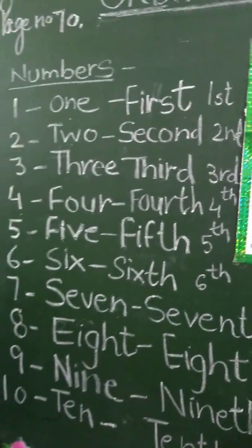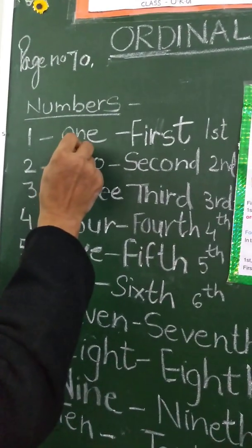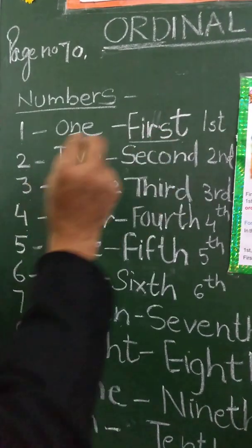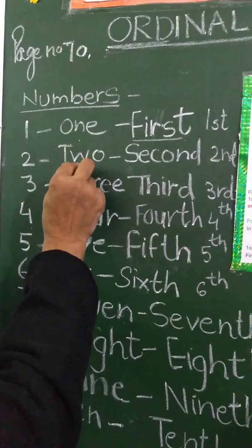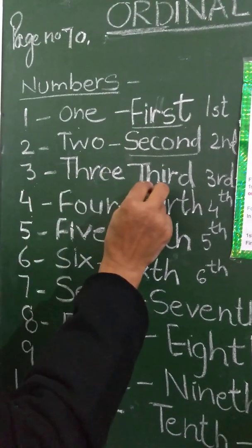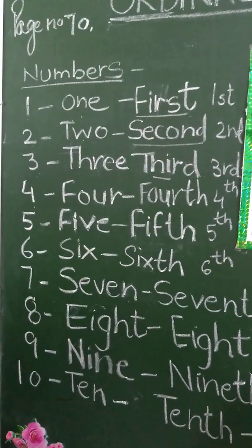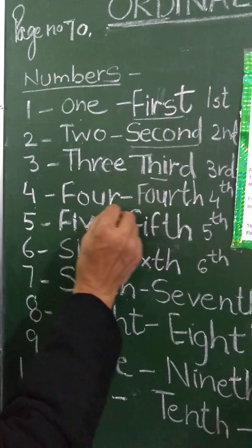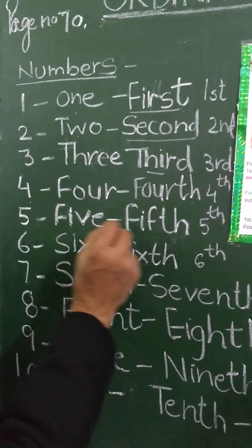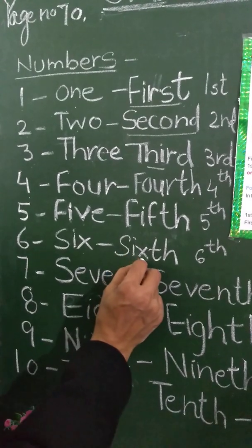Here I will tell you what an ordinal number is. When we say one, in ordinal number we will say first. Number two, we will say second. In three, ordinal number is third. These numbers are telling positions. In four, we will say fourth. In number five, ordinal number is fifth. And in six, ordinal number is sixth.